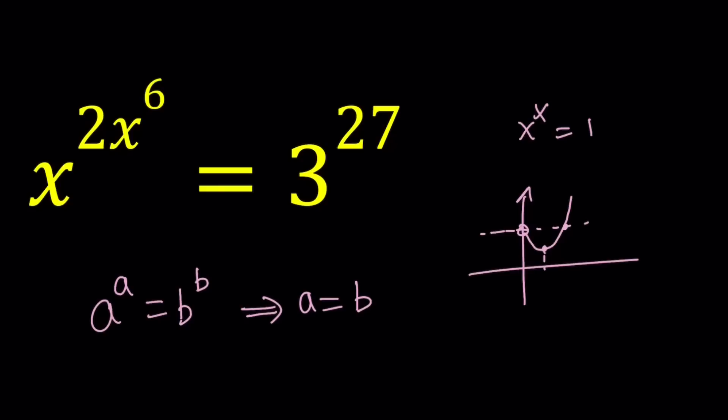But if the y value is less than 1, let's say something on this interval, then you're going to get two solutions. But we're looking at a very large number, so we're going to end up getting a single solution.